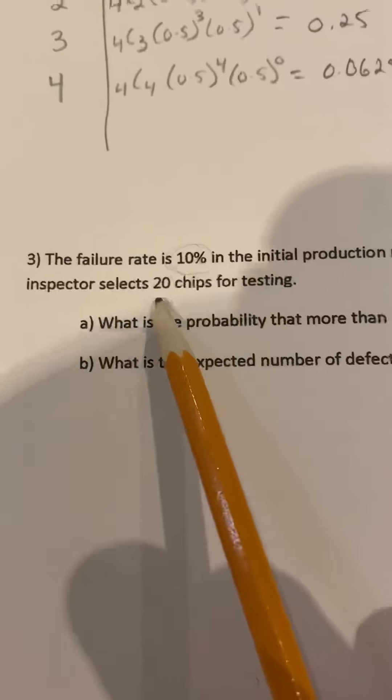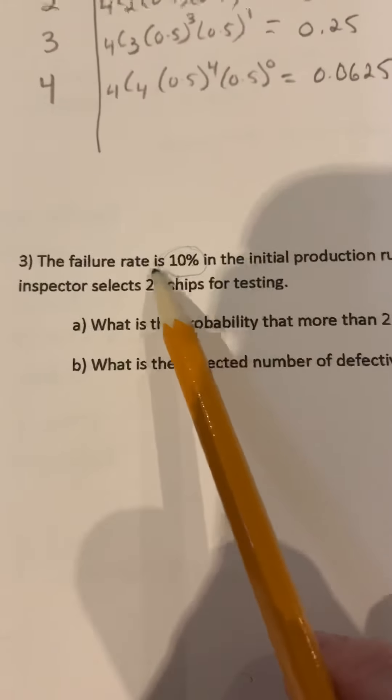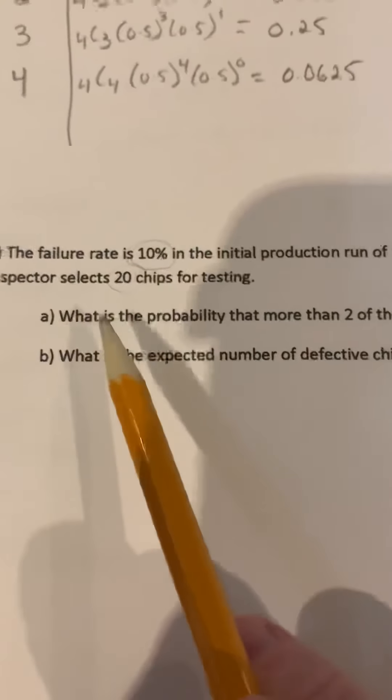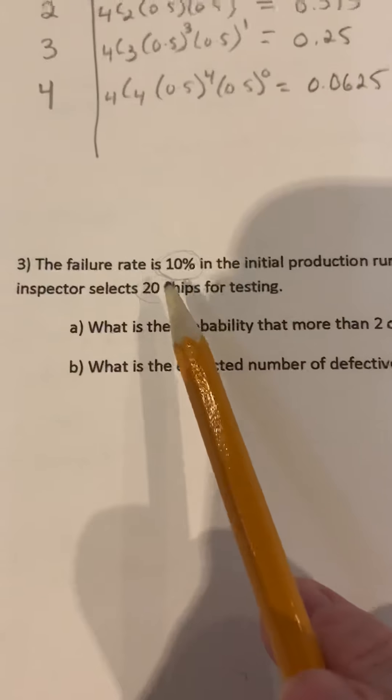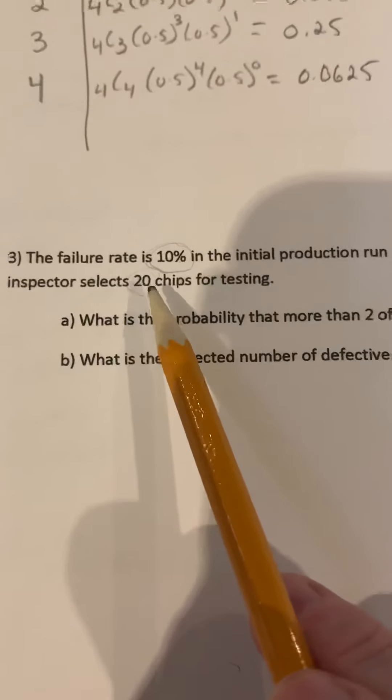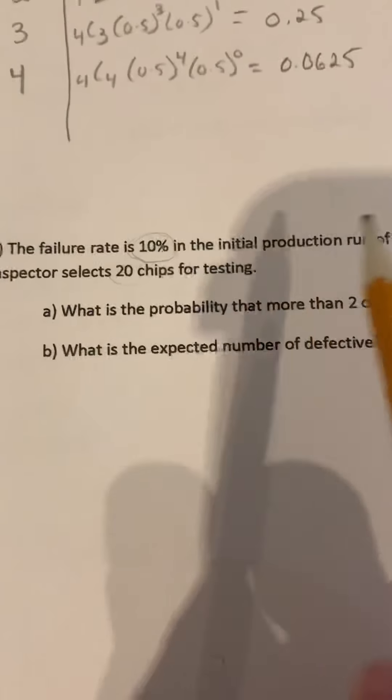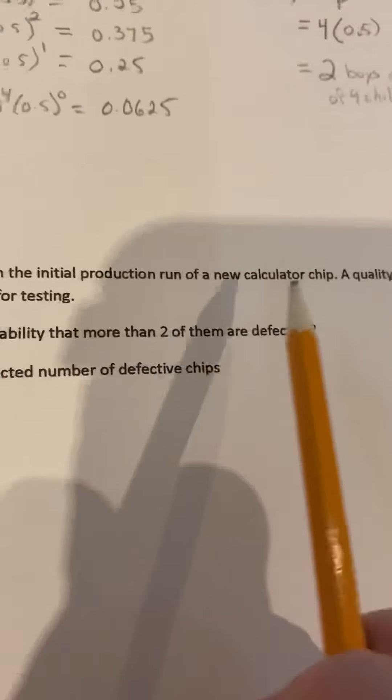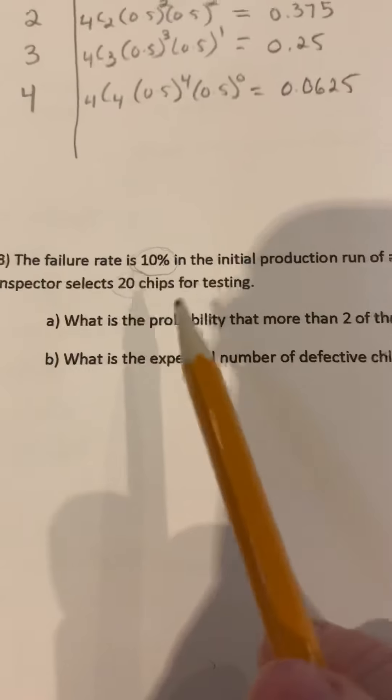So we're doing 10% of 20 chips. These 20 chips that you select, each chip is independent. So if one chip works, doesn't mean the next one will not. Each calculator chip that you choose, each one is independent.